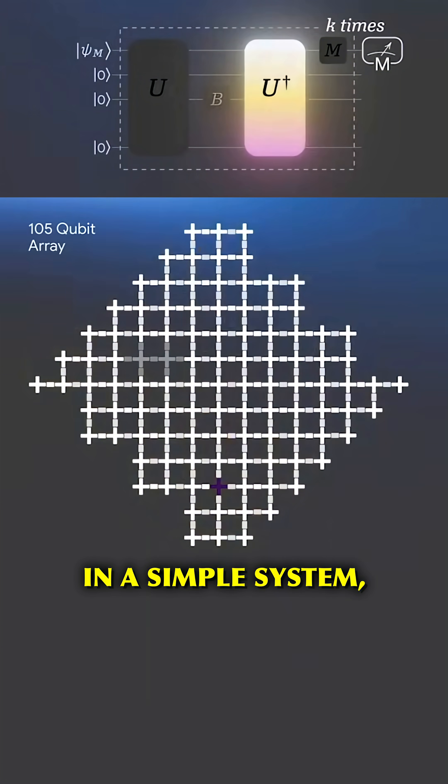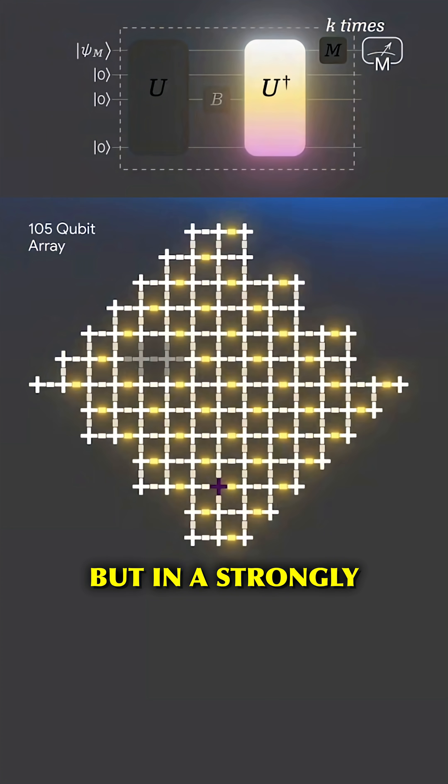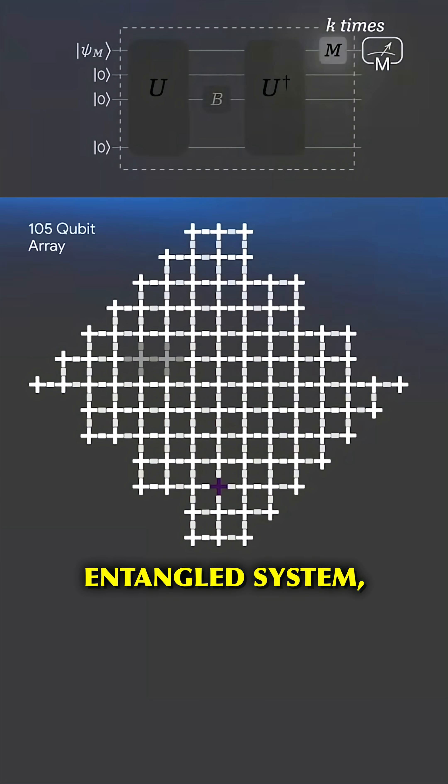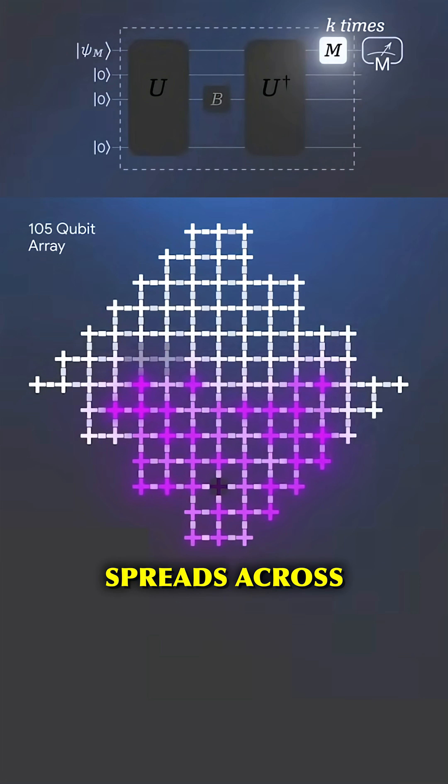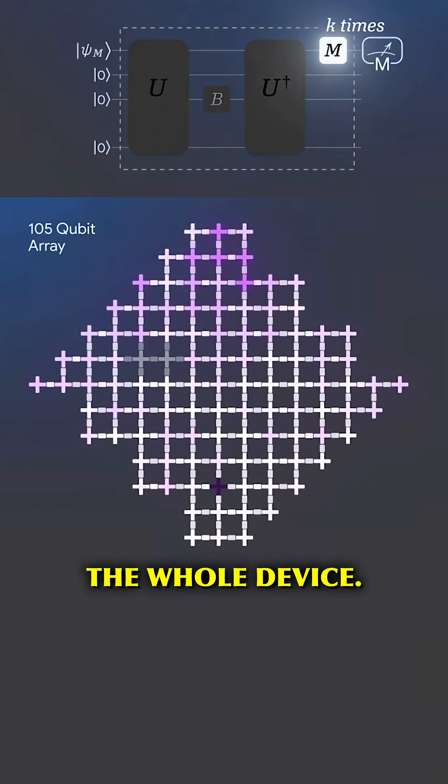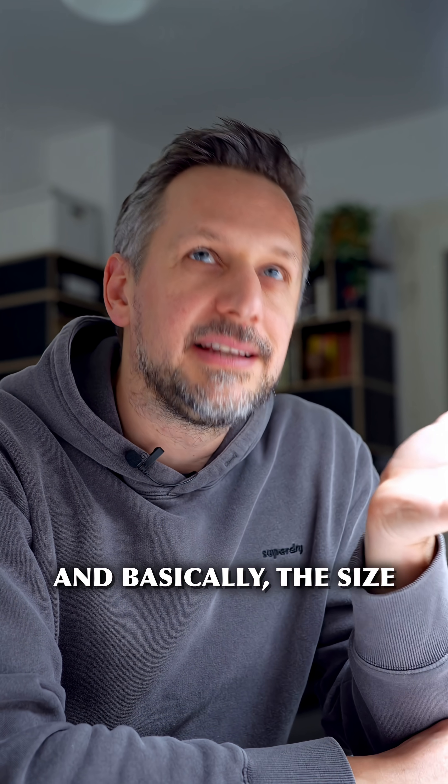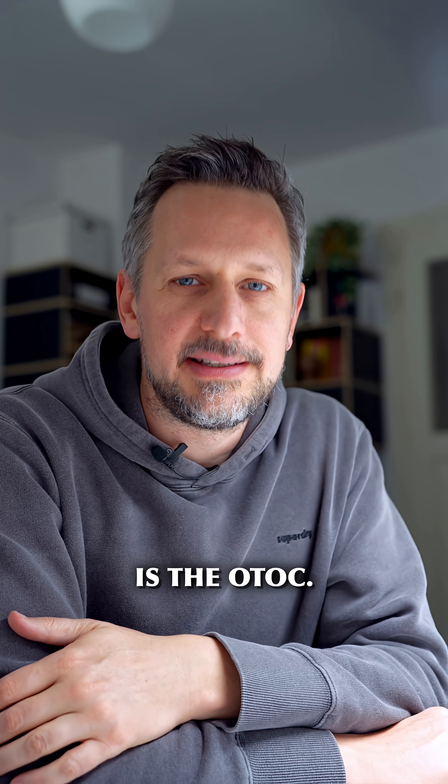In a simple system, you would get back to almost exactly where you started. But in a strongly interacting, entangled system, that tiny disturbance spreads across the whole device. So when you rewind, you don't go back to the initial state, you get a distorted echo. And basically, the size of that distortion is the OTOC.